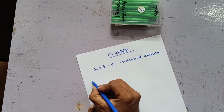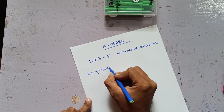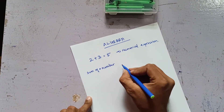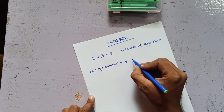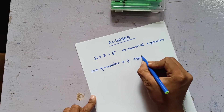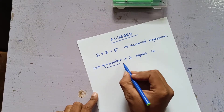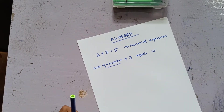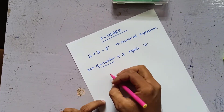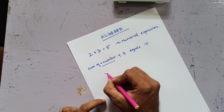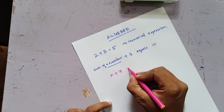What if I say the sum of a number — it can be any number — when I add it with 7 will give me 10? So this number can be anything. How will I write this as a mathematical expression? I can say this number is X, and I add X to 7, which gives me 10.